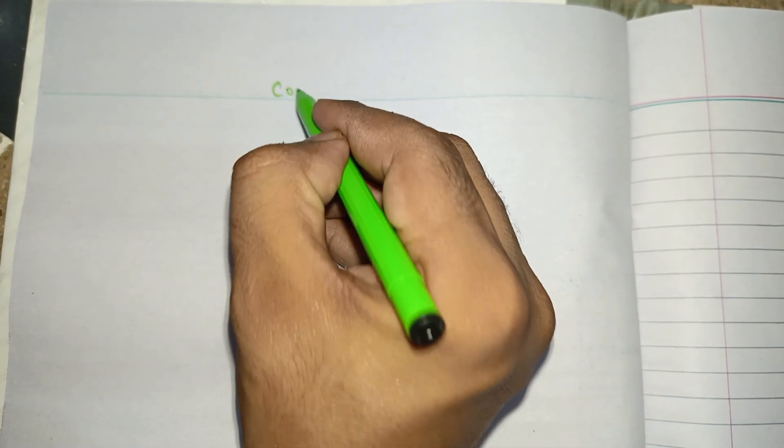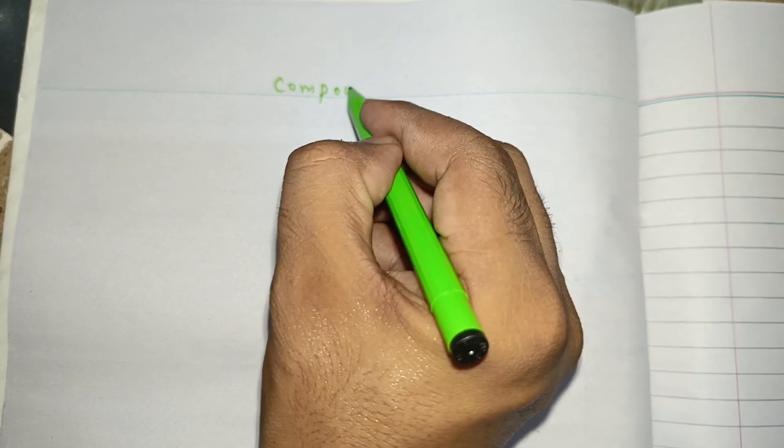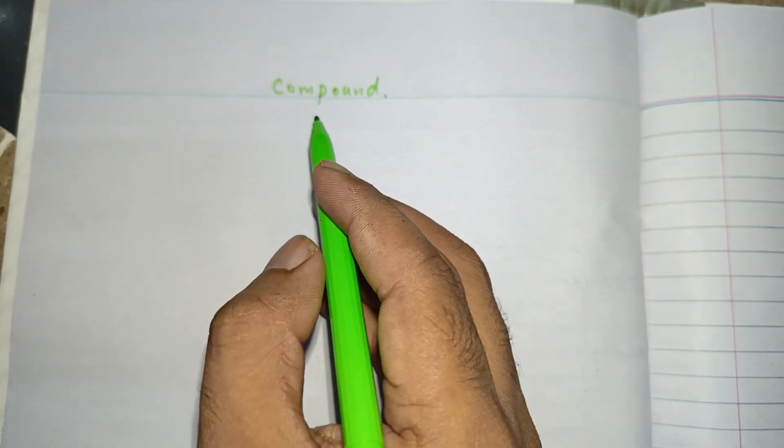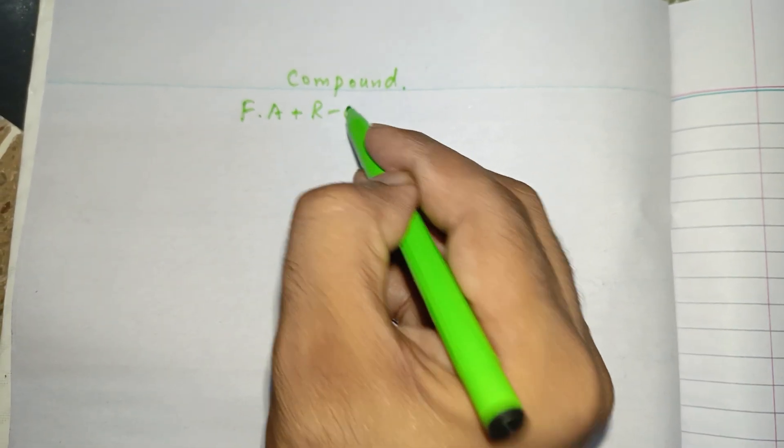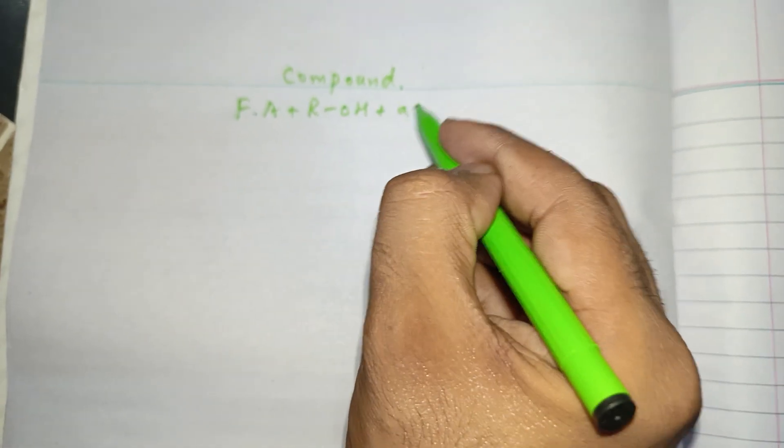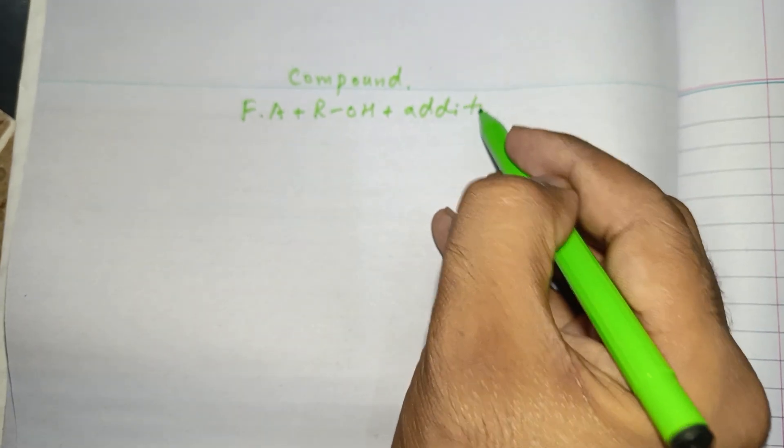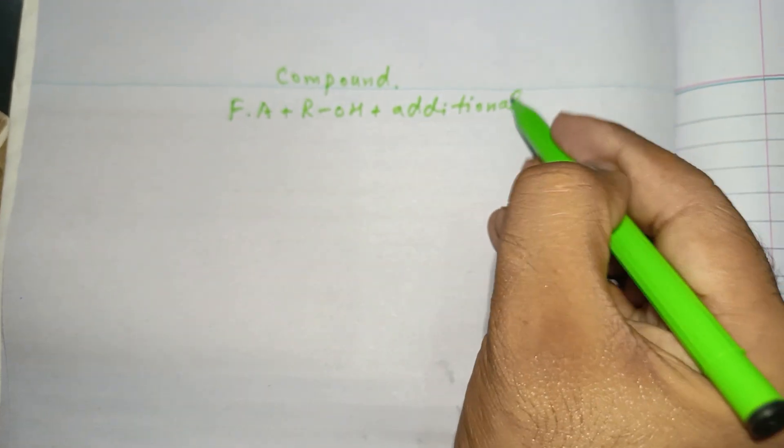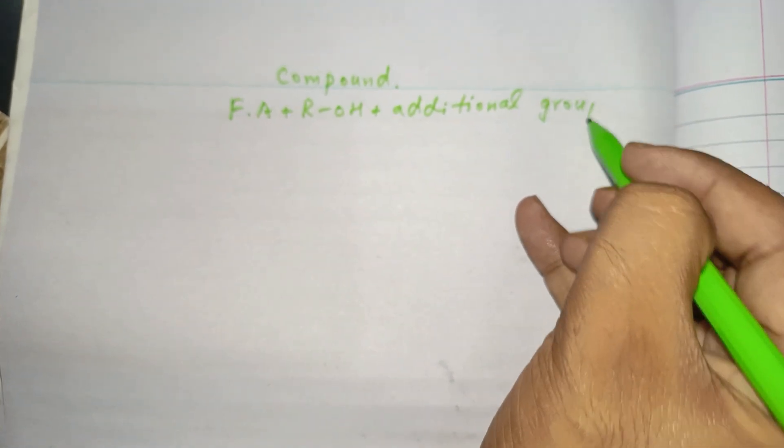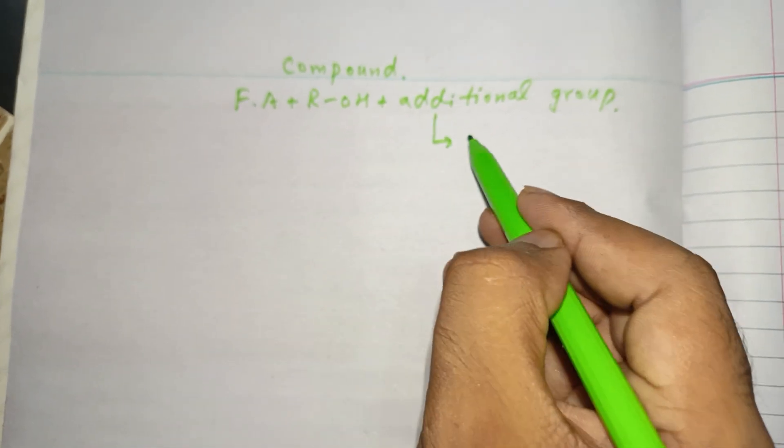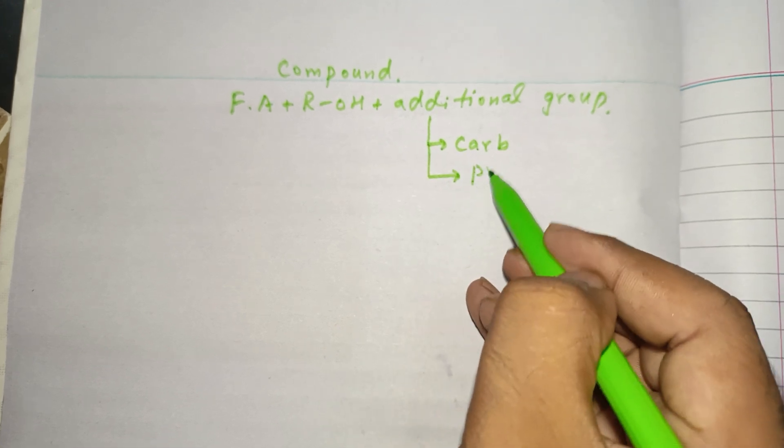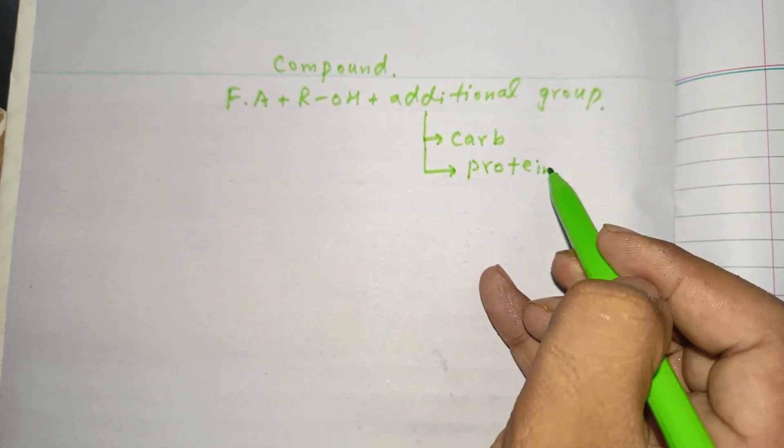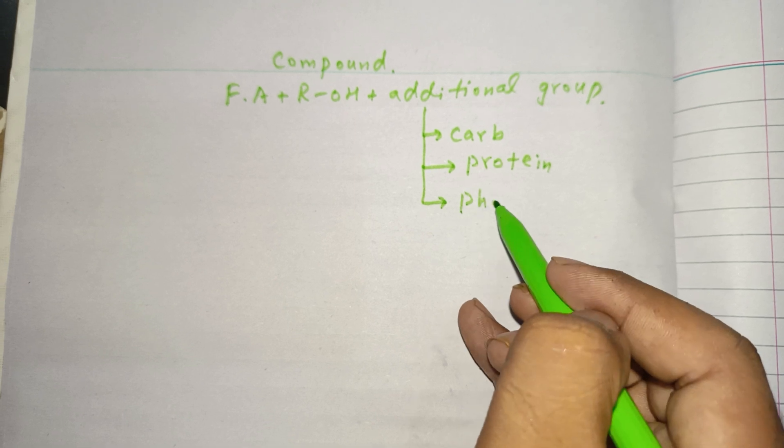The second classification of lipids is compound lipids. Compound lipids consist of fatty acids plus alcohol plus an additional group. The additional group in compound lipids may be carbohydrates, protein, or phosphoric acid.